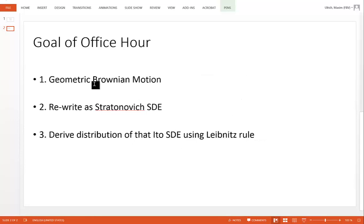First, we want to state a geometric Brownian motion as an Ito stochastic differential equation. Then we want to rewrite that as a Stratonovich SDE. And last but not least, we want to derive a solution to that Stratonovich SDE using some ODE trick. And here we will use the Leibniz rule, separation of variables.